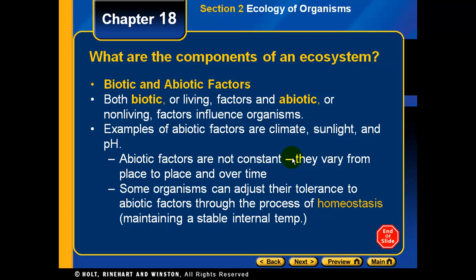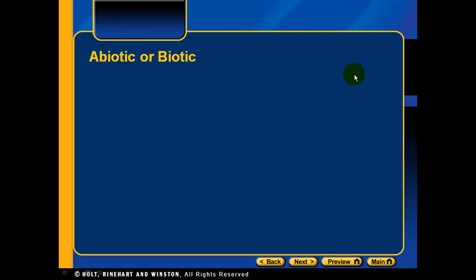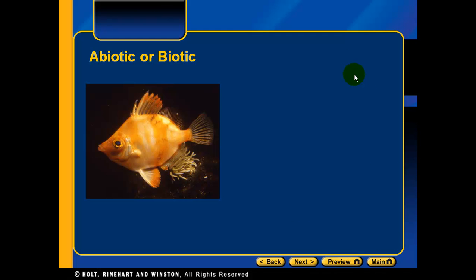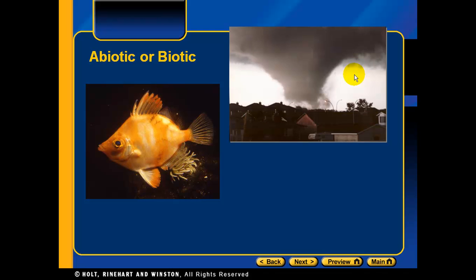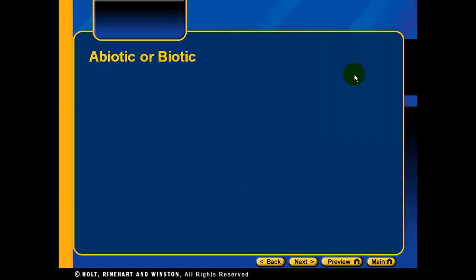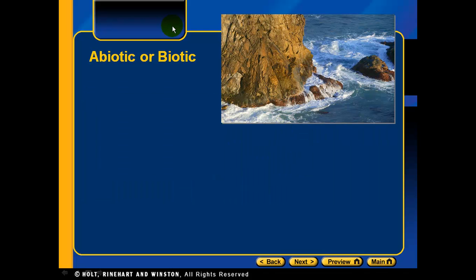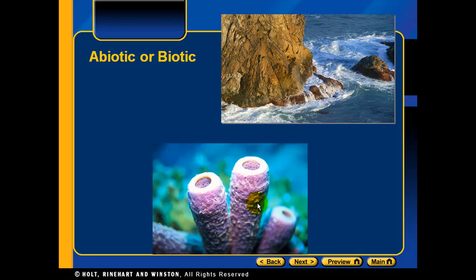Some organisms can adjust their tolerance to these abiotic factors through the process of homeostasis. For example, a fish is biotic, a tornado is abiotic, water in the cliffs is abiotic, and coral is biotic.